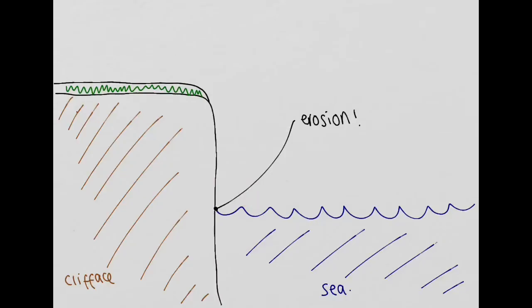Now over time, these erosional processes start to remove some of the cliff face rock. So we start to get small indents within the cliff face rock. And over time, this process repeats itself over and over again, up until we get what we call a wave cut notch.